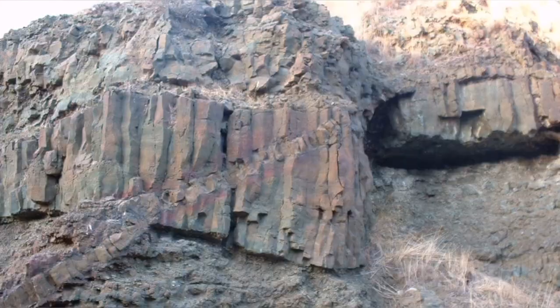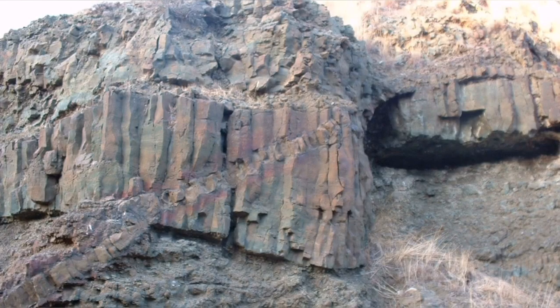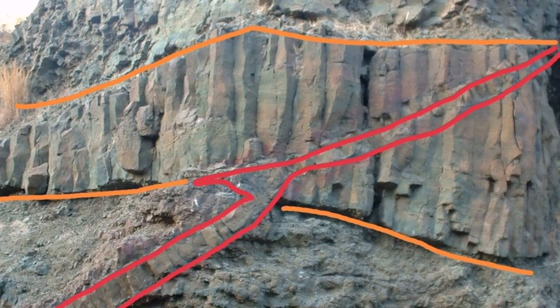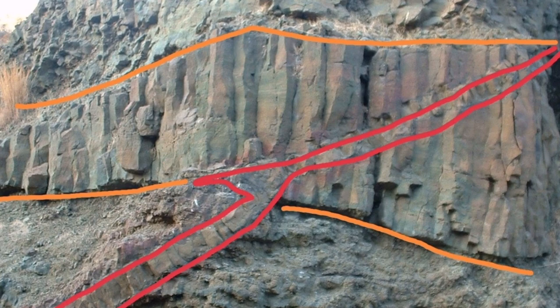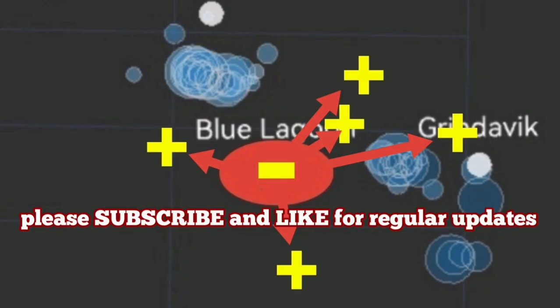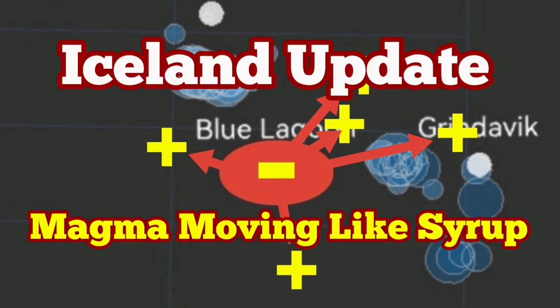Similar to what we see in Ophiolites, for example, in Cyprus. This is the Troodos Mountains of Cyprus. Practically, what we are seeing through this seismic activity and the GPS data is the formation of the Ophiolite body at depth. Very similar, the sequence.